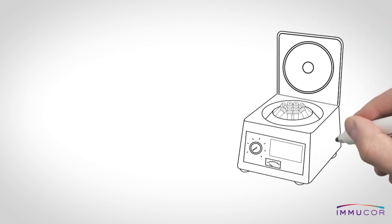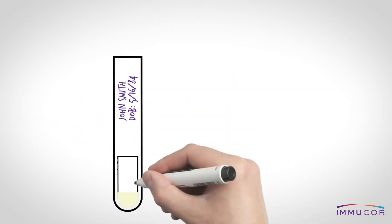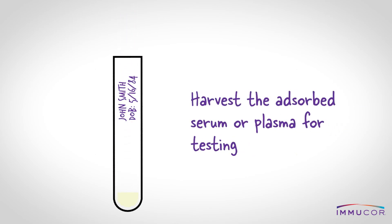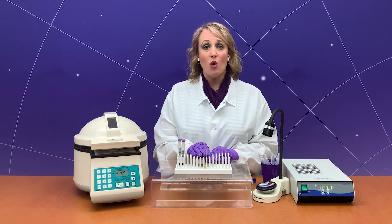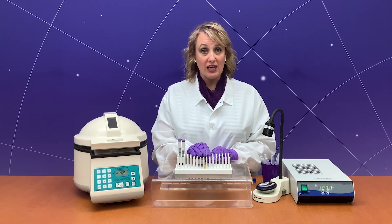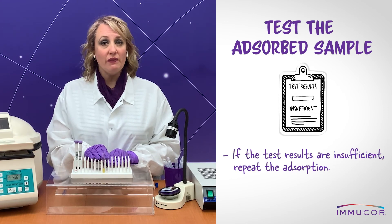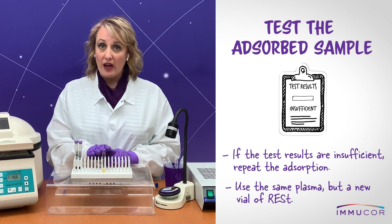After incubation, centrifuge the vial for two minutes or until the stroma is sufficiently packed. After centrifugation, harvest the adsorbed serum or plasma using a transfer pipette. Test an aliquot of adsorbed serum or plasma to determine if sufficient cold agglutinin reactivity has been removed. If results are insufficient, repeat the adsorption using the same plasma but a new vial of REST.